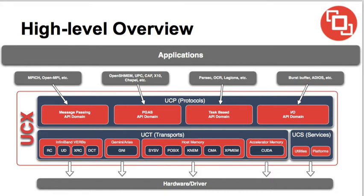This diagram provides a high-level overview of the effort. In gray are all the external applications and programming models. In blue and orange is the UCX framework itself. The framework consists of three main parts. The top part is called UCP — P stands for protocols. This is the high-level API that exposes different interfaces for various programming models. We have a family of APIs for message-passing libraries such as MPI and OpenMPI, and a family for PGAS-based programming models including OpenSHMEM, UPC, and Chapel.